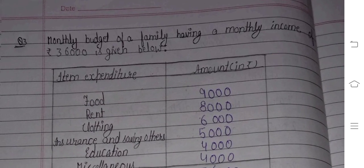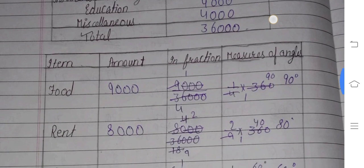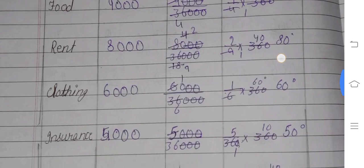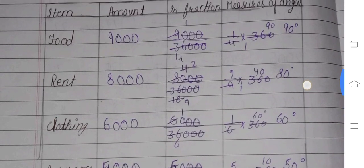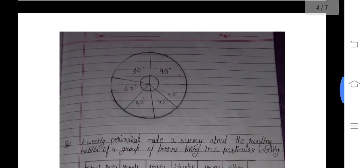Now start question number three. Question number three: the monthly budget of a family having a monthly income of 30,000 as given below. We have items expanded and amounts. Total expand includes food, rent, clothing, source of saving, education, and miscellaneous. We will add all these, which gives us 30,000. Then we divide each amount by the total and multiply by 360 to get the angles. For example, food is 9000 divided by 30,000 multiplied by 360, which gives us the angle.